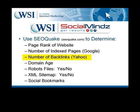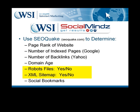Number of backlinks — this is the amount of people pointing links back to your website. Domain age: SEOquake will pull up this information on any website and determine how old that website has been around. From a search engine perspective this is very important because they give credibility to sites that have been around for a longer period of time. SEOquake will also tell you if the website has a robots.txt file, and if they also have an XML sitemap, which allows the search engines to easily crawl and understand all the different pages of the website.